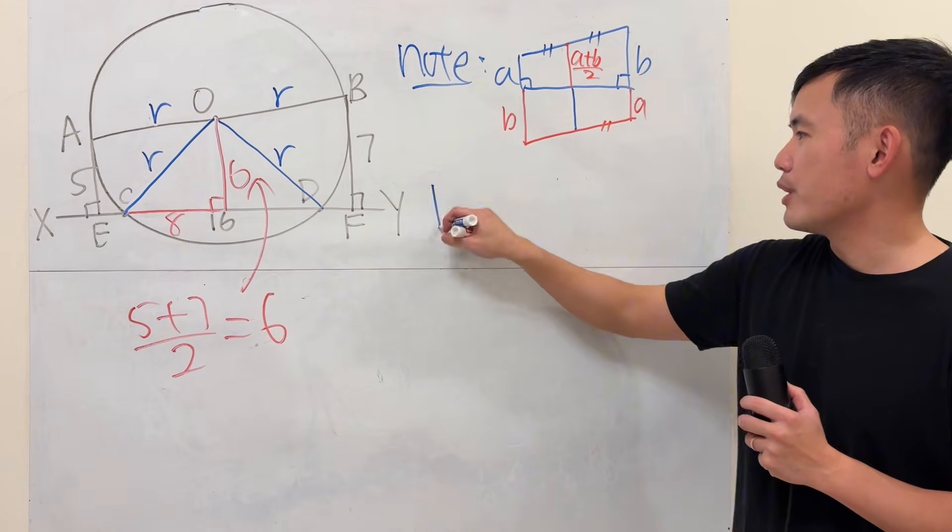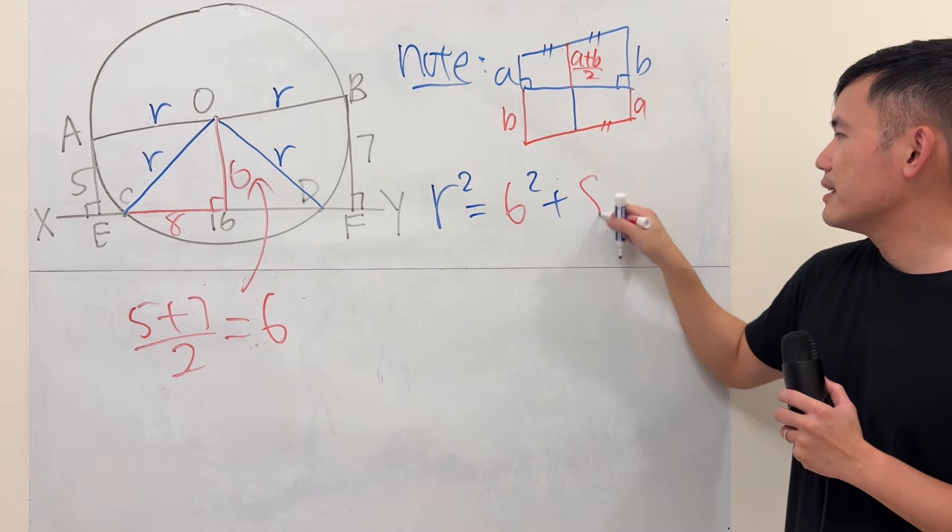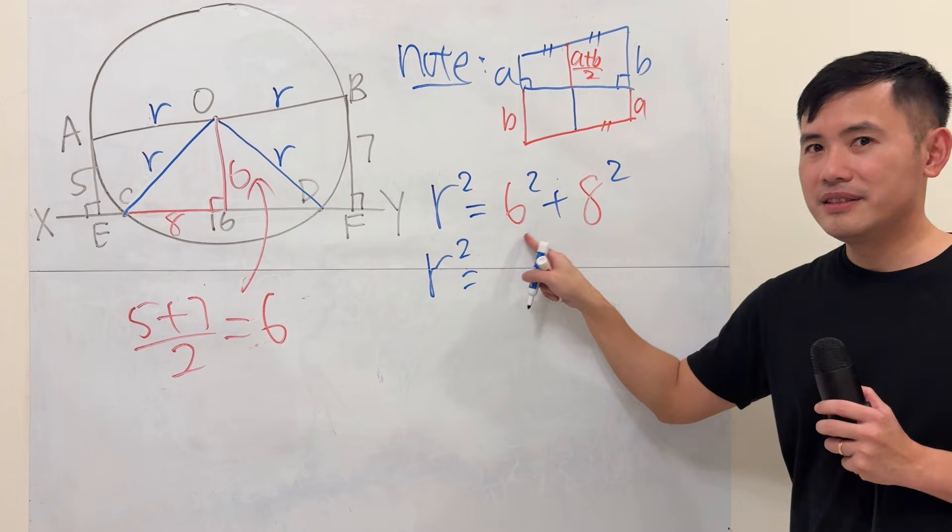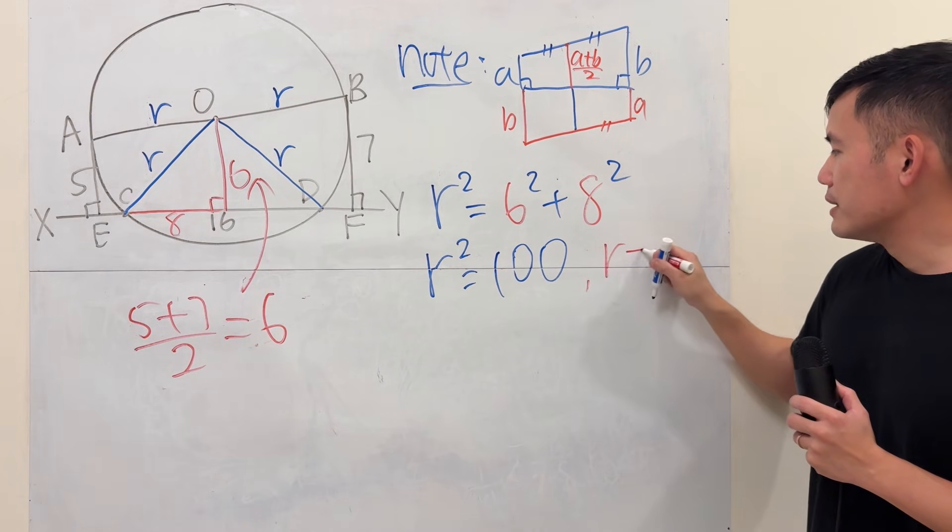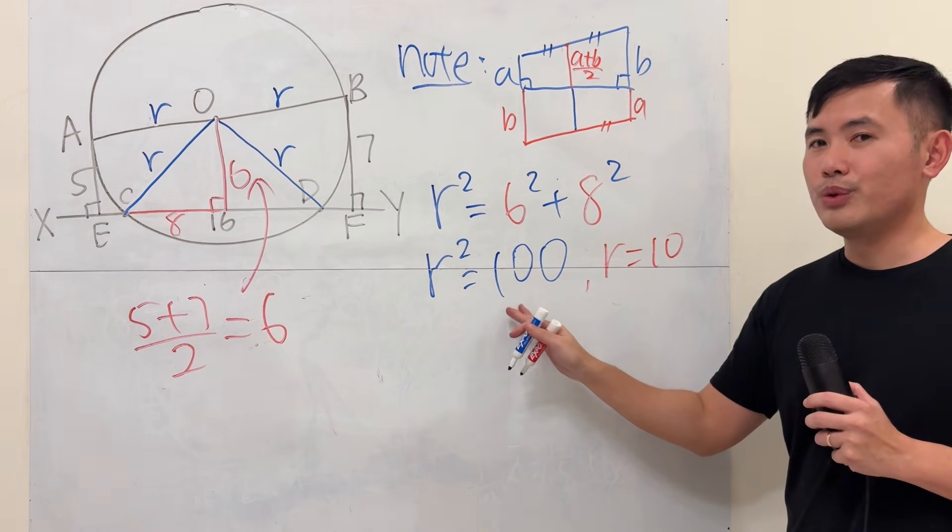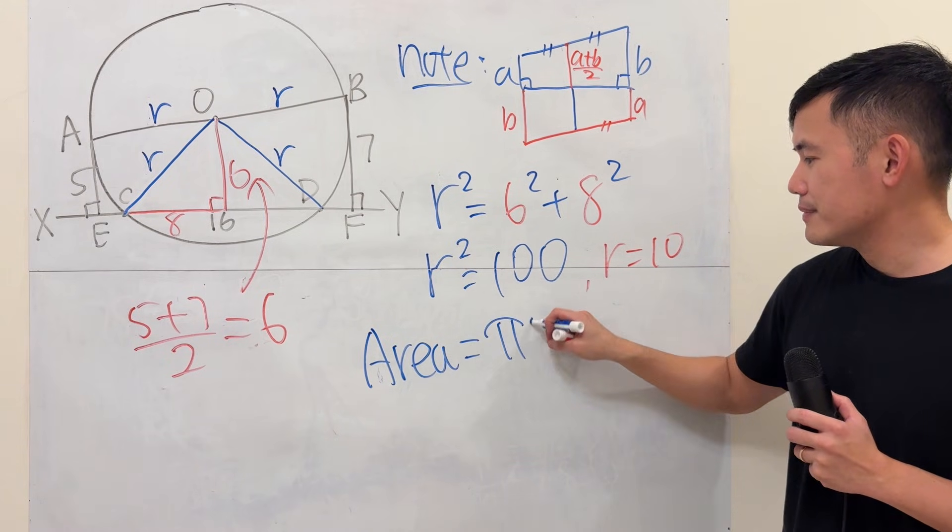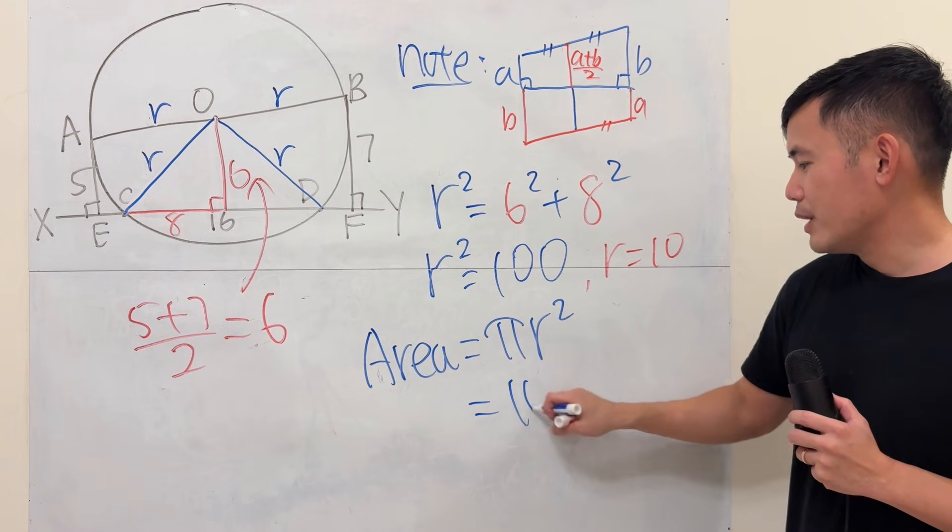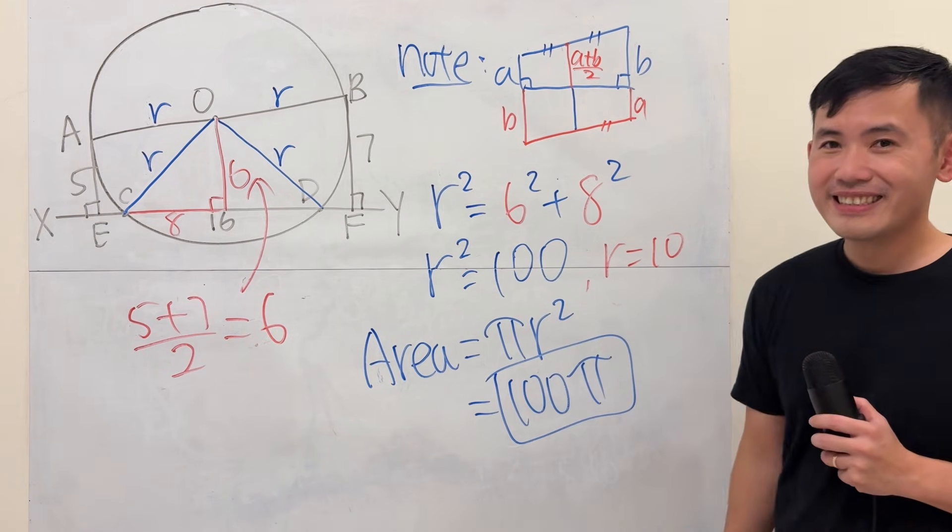By the Pythagorean theorem, r squared is equal to 6 squared plus 8 squared. So r squared is equal to 36 plus 64, that would be 100, and of course r is equal to 10. But I'm just going to use this because the question is asking us for the area of the circle, so pi r squared. And we know r squared is 100. There we have it, the answer is 100 pi.